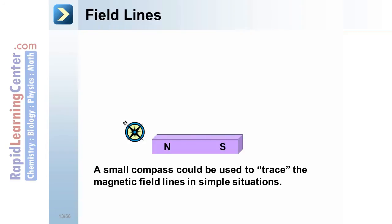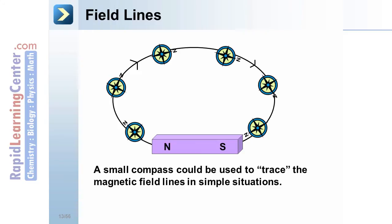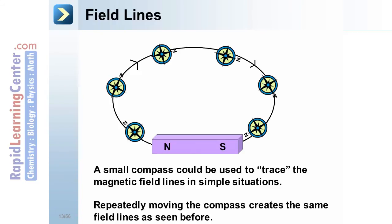Put a compass near one pole, and make a point, a pencil point, where the north end of the compass points. Then move the compass again, move the compass again, and so forth, and so on. Eventually, you will get a nice picture of where the magnetic field lines go. Repeatedly moving the compass creates the same field lines that we saw in the previous diagram.